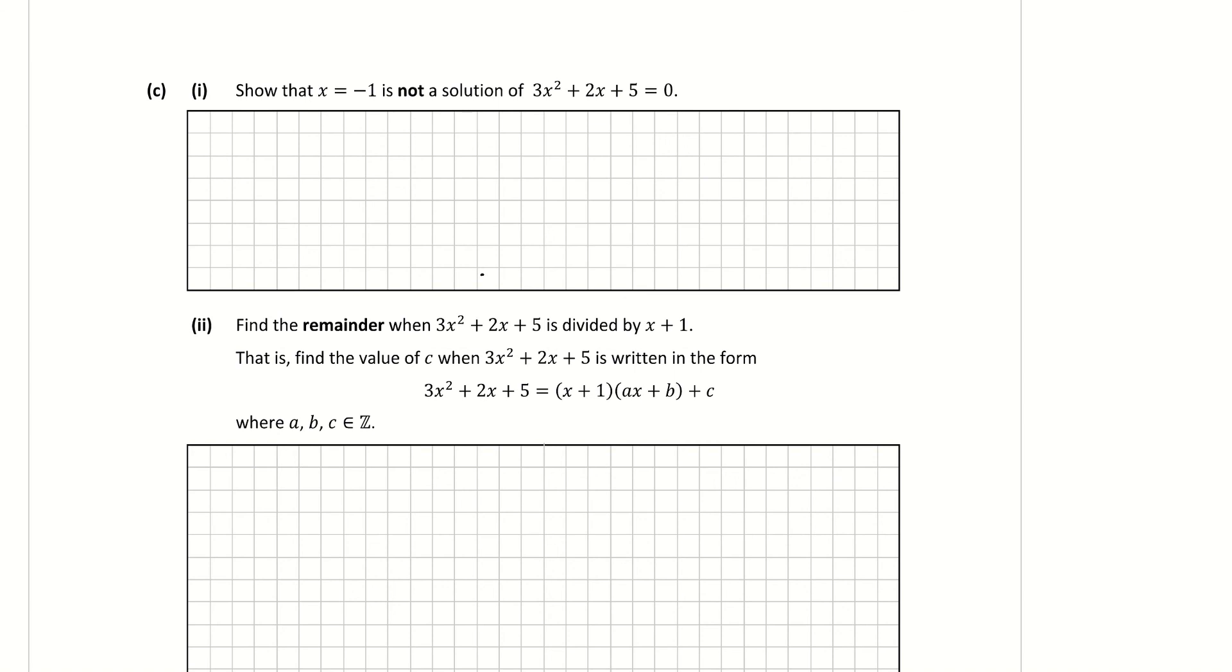Part C1: Show that x = -1 is not a solution of the following equation. To show if something's a solution, we can sub it into the equation and it should equal 0. So if we sub in the -1 for x here, we get 3(-1)² + (-1) + 5 = 0. That gives me 3 - 1 + 5 = 0, which is 8 - 1... that gives me, actually, 3 + 5 = 0, that's 8 - 2 = 0, 6 = 0. And 6 is clearly not equal to 0. Therefore, not a solution.